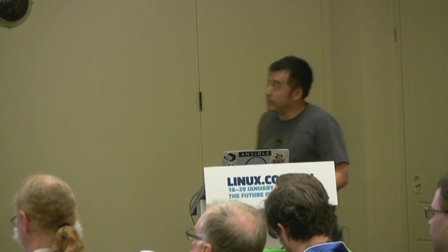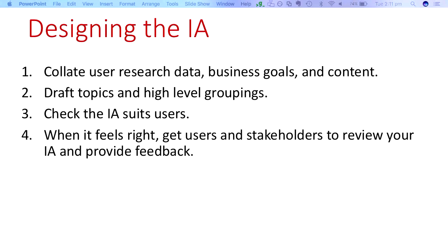The next part is designing the actual IA. The general steps are: collating all your user research data, understanding your business goals and any existing content, then drafting your topics and high-level groupings or chapters. After that, you review it to check it addresses the user's needs and refine it. When you feel it's about right, you can get users and stakeholders to review your content. Steps three and four can cycle around a couple of times.